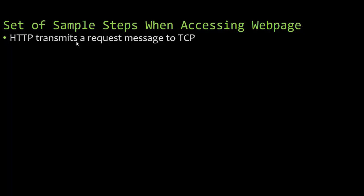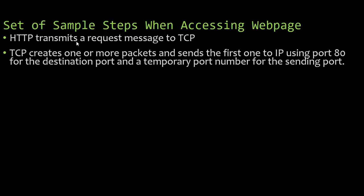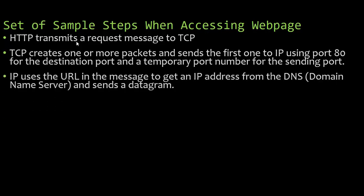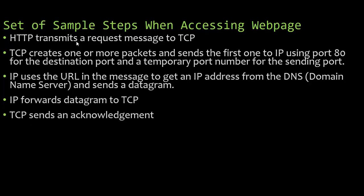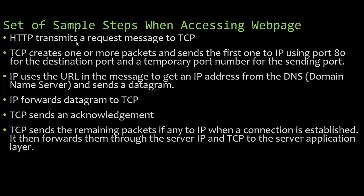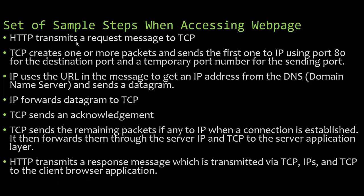Here are sample steps when accessing a web page: HTTP transmits a request message to TCP. TCP creates one or more packets and sends the first to IP using port 80 for the destination port and a temporary port for the sending port. IP uses the URL to get an IP address from the domain name server and sends a datagram. IP forwards the datagram to TCP, which sends the remaining packets. These are then forwarded through the server IP and TCP to the server application layer, and HTTP transmits a response message back to the client browser saying the web page is on its way.